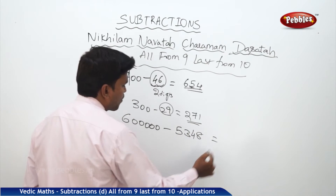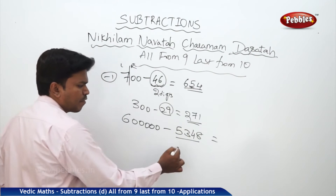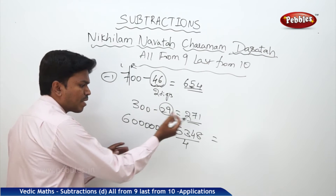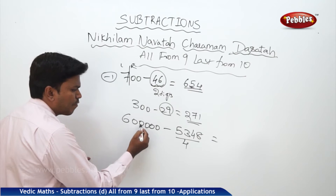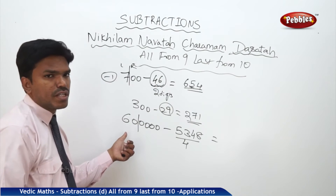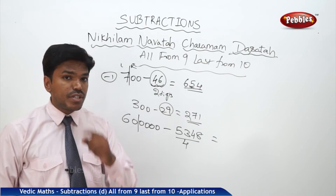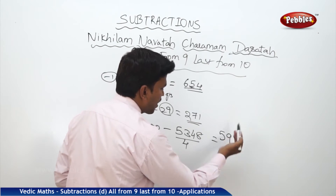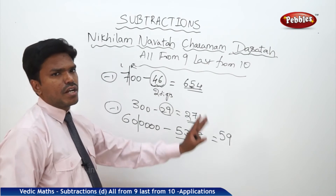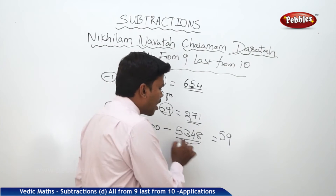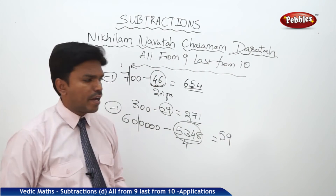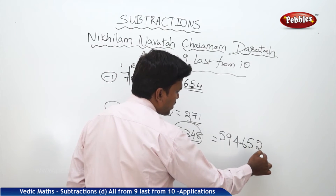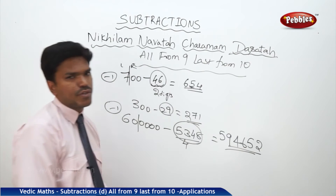For 6 lakhs minus 5348: how many digits are there in the subtrahend? 4 digits. Now make a partition from the right side — 4 digits: one, two, three, four. What is the left-side number? 60. If 60 is reduced by 1, how much will you get? 59. Now to get the remaining answer, apply All from 9, Last from 10 to the subtrahend 5348. For 5 it is 4, for 3 it is 6, for 4 it is 5, and the last number from 10 gives 2. So my answer is 594652.